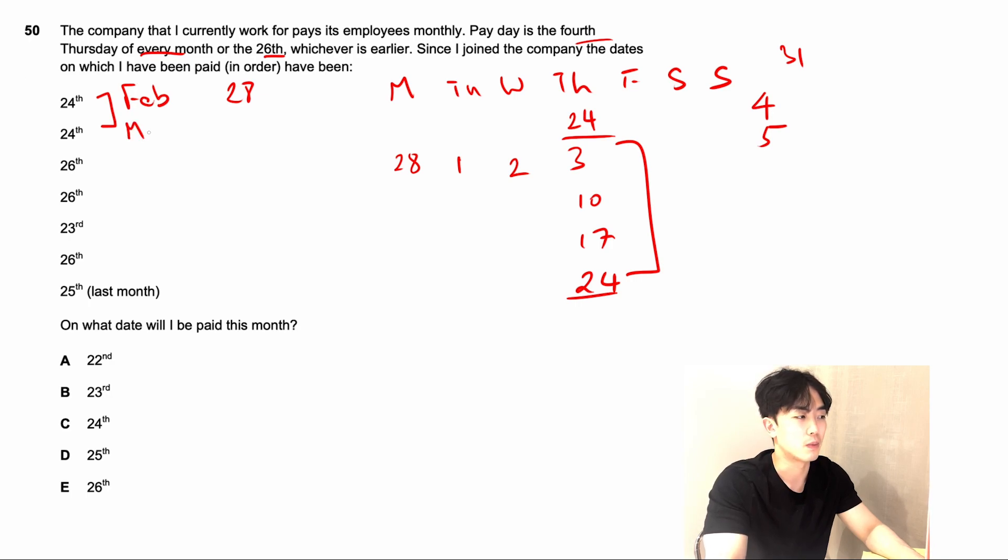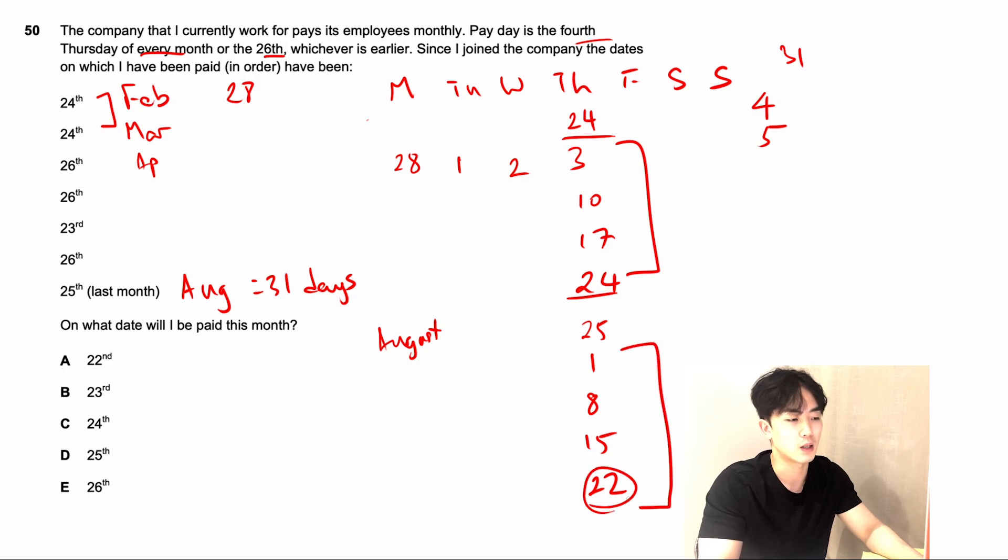That means this second month is March. We have April, May, June, July, meaning the last month we've paid was in August. As we know, there's going to be 31 days in August. Moving on to August, he was paid on the 25th. That's not the 26th, that's going to be a first day again. So 25th, and then just adding seven days to each one. Seven days will be 32, so that means it's going to be the first, 8, 15, 22. Once again, there's four first days in between here before it hits 27. So that means they're going to be paid on the 22nd of September.